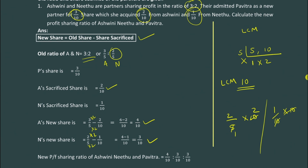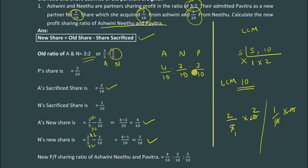The last step is to find the profit sharing ratio of all three partners. Pavitra's share is given as 3/10. Ashwini's new share is 4/10, Nitu's new share is 3/10, and Pavitra's share is 3/10. So the new profit sharing ratio of all three partners is 4:3:3.